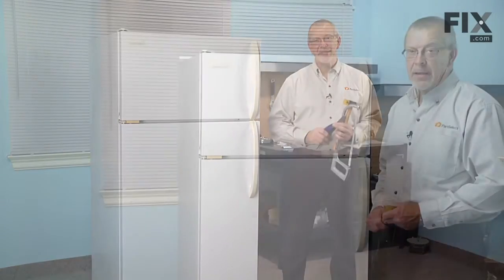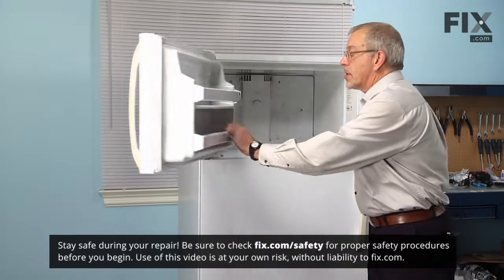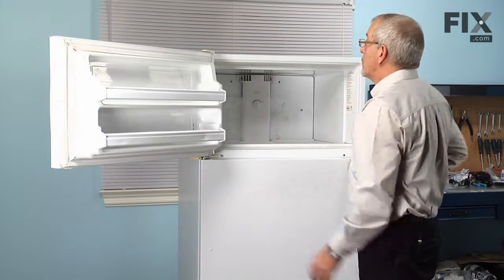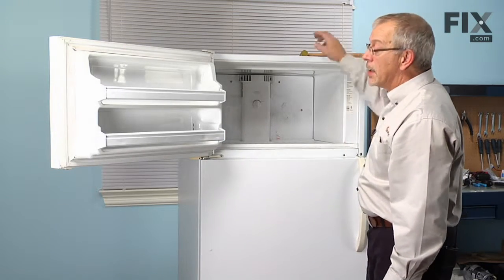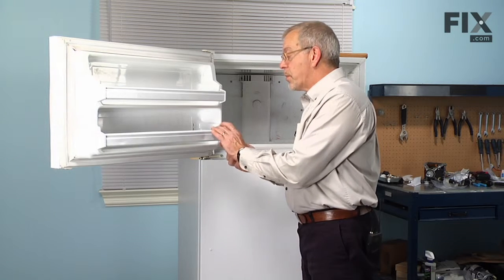Let me show you how we do it. To do this repair, we'll start by opening the door of the shelf bar that we're going to replace, and then we'll remove one of the end caps. They have two little locking tabs, one on the top and one on the bottom.